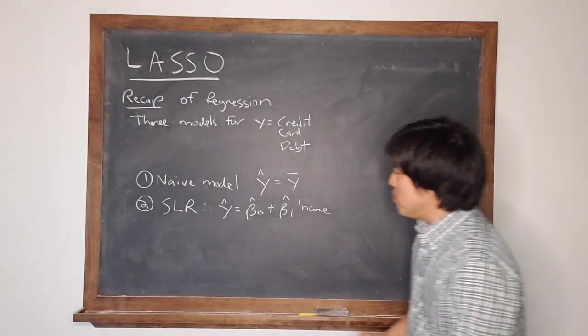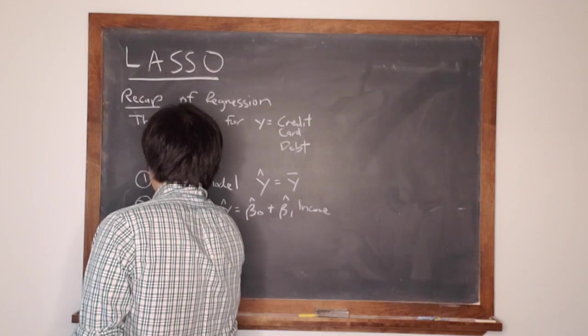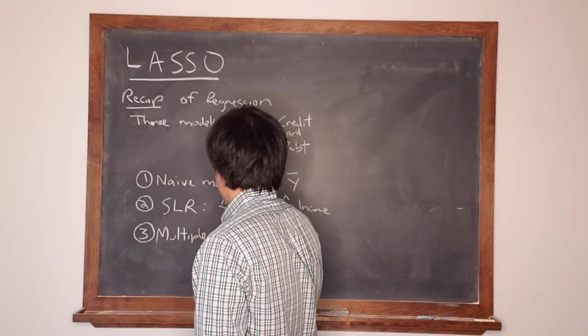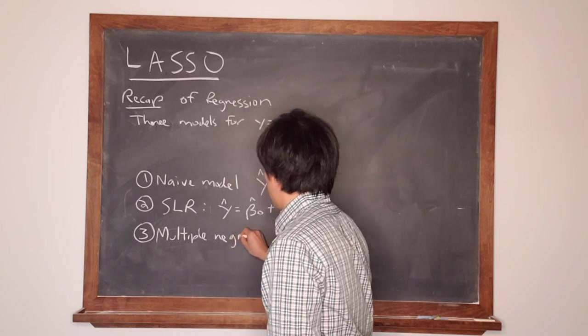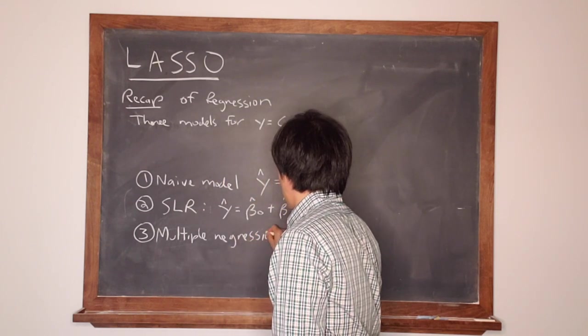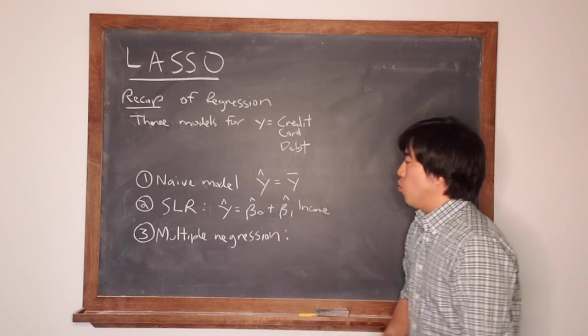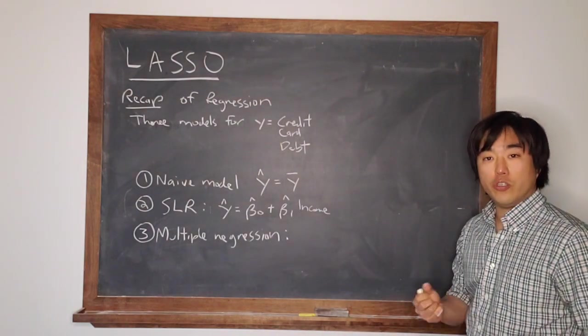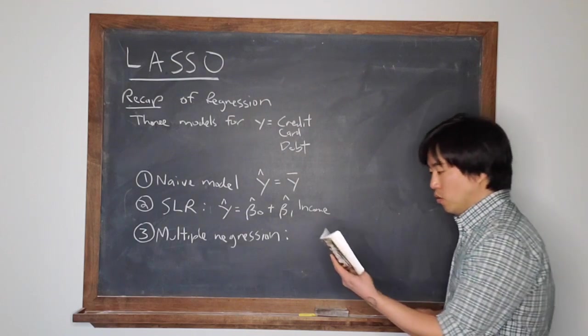And the third model that they consider here is multiple regression, where now we're not just going to use one predictor variable, we're going to use two predictor variables.